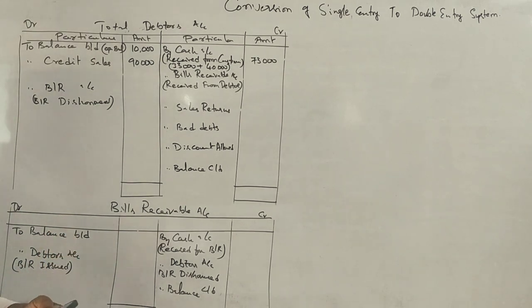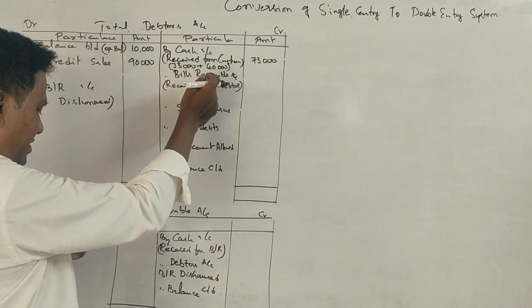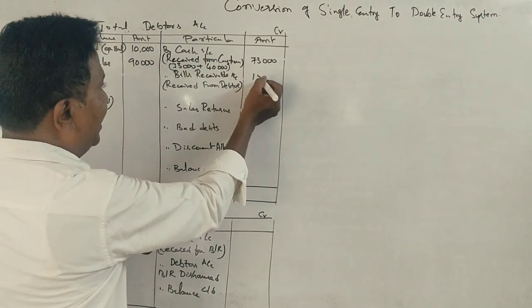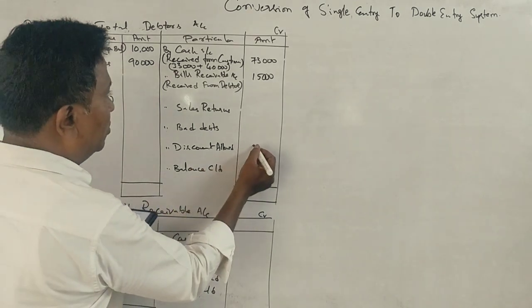Acceptance received, Bills Receivable: 15,000. Discount: 2,000.